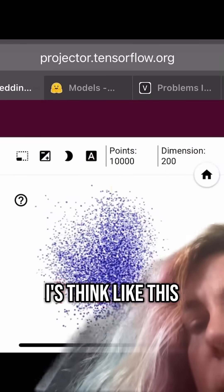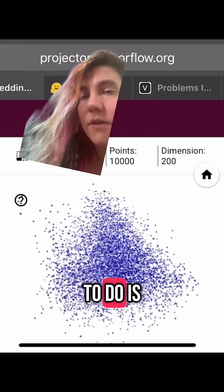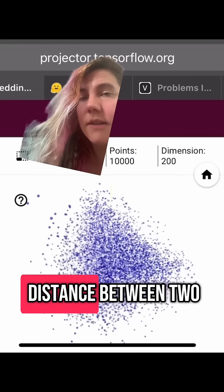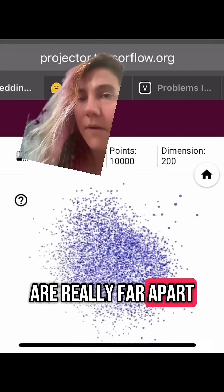Basically, AIs think like this. This is the shape of their thoughts. What it learns to do is figure out the distance between two concepts. Two and three are close by. Kazoo and giraffe are really far apart.